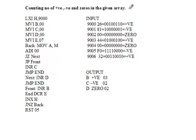Hi everyone. Today let me show how to make the counting of positive, negative, and zeros in a given array with the help of 8085 microprocessor assembly language.